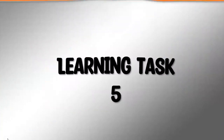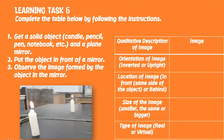For learning task 5, complete the table below by following the instructions. Get a solid object like a candle, pencil, pen, or notebook, and a plain mirror. Put the object in front of the mirror and observe the image formed. A qualitative description of the image is in the first column. Answer the second column: for the first row, give the orientation of the image — is it inverted or upright? For the second row, give the location — is it in front or behind? For the third row, give the size — is it smaller, the same, or bigger? And last, give the type of image — is it real or virtual?